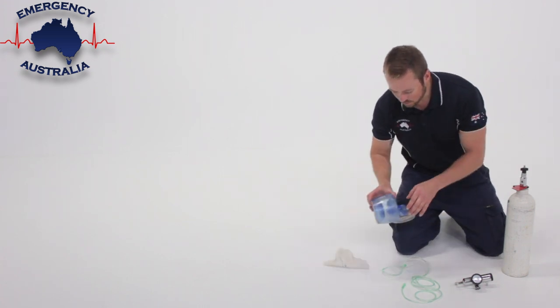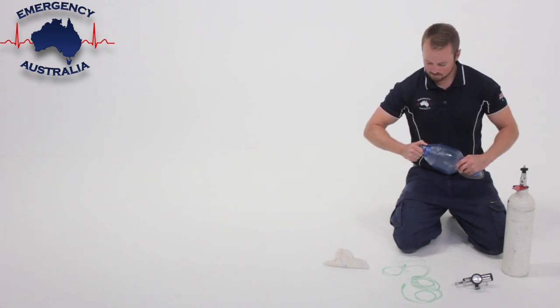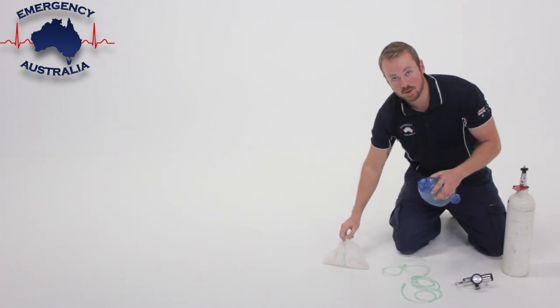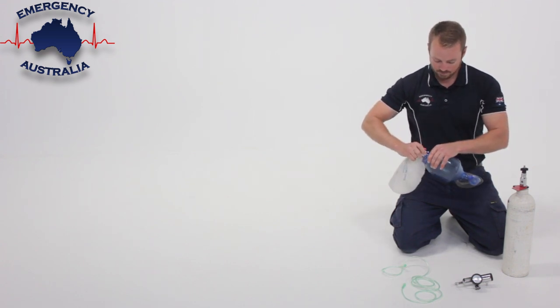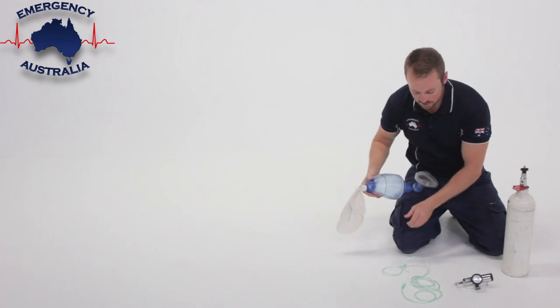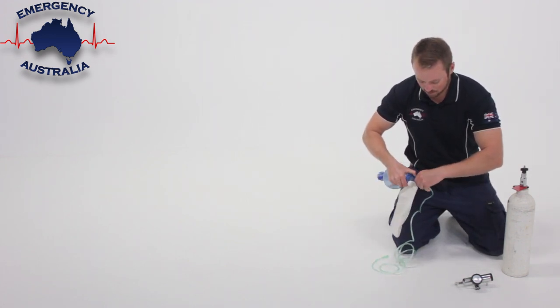First off, open up your BVM, connect the reservoir bag, ensure there are no holes, and connect the O2 tubing to the back of the BVM.